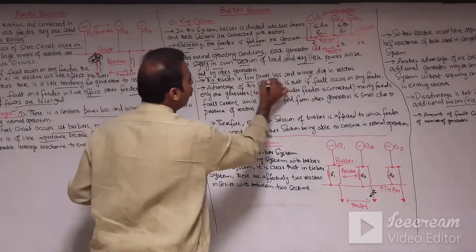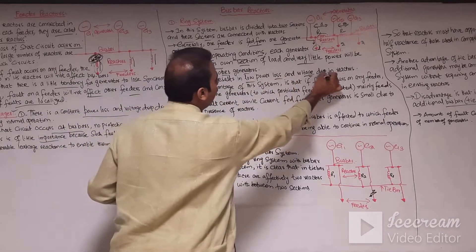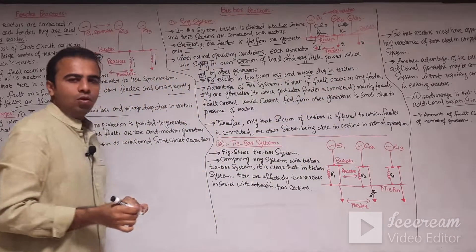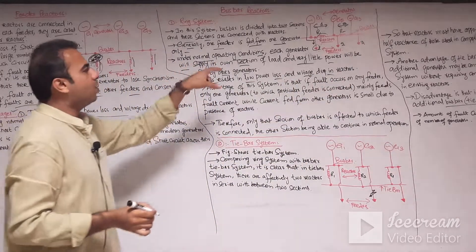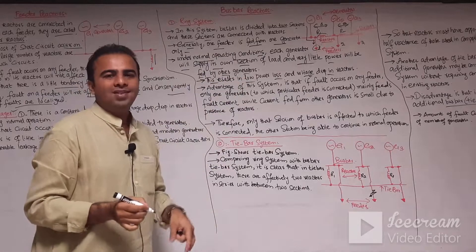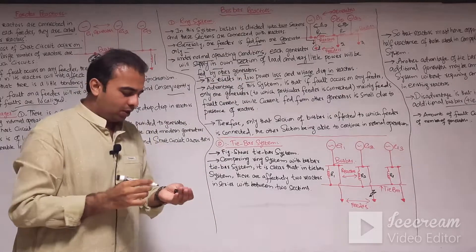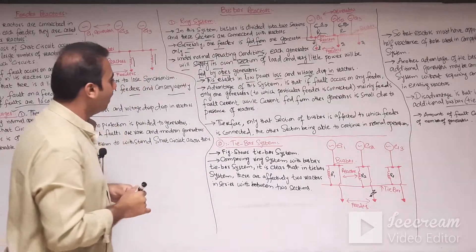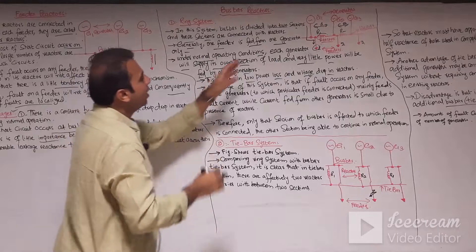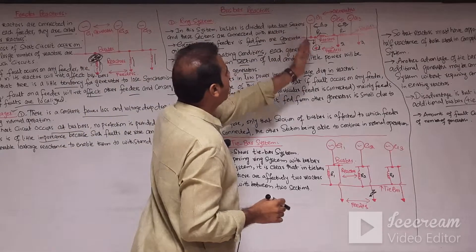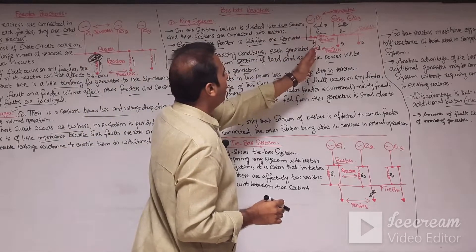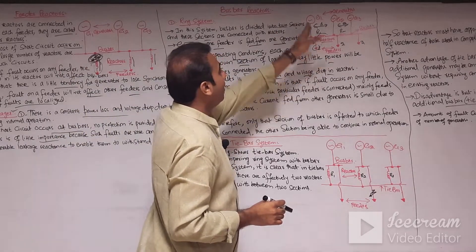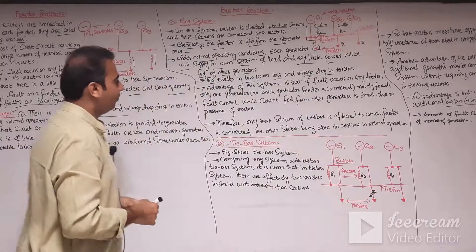This results in low power loss and voltage drop in the reactor. The voltage drop and power loss in the feeders is very less because each feeder is supplied by its own generator.